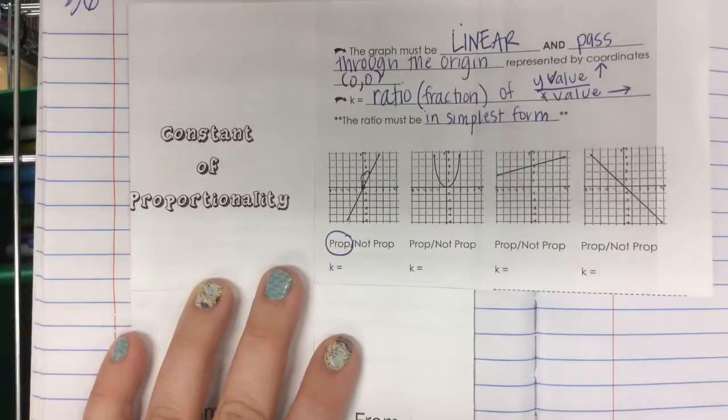So what's my K value? How many did I go up? What was my Y value? Two. And how many did I go over? One.